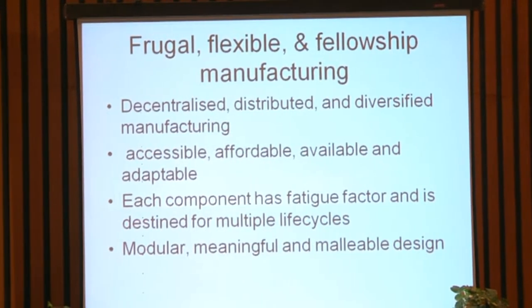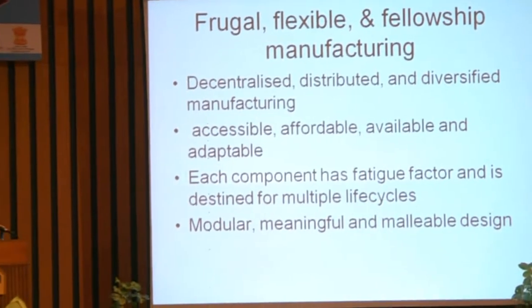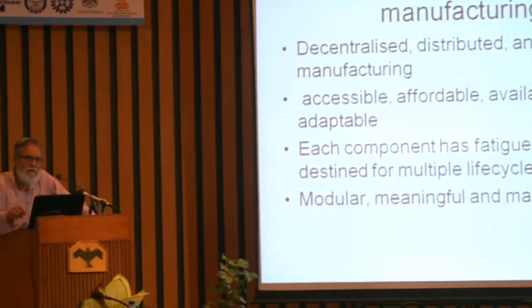Given the diversity of user contexts, a common design may not satisfy all needs. The supply chain logic must be: accessible, affordable, available, and adaptable. There is no point in something being accessible but not affordable, or affordable but not available. You go to a primary health centre and the systems are not working, the drug is out of stock — what's the point? All four conditions must be satisfied, including adaptability to my specific needs.